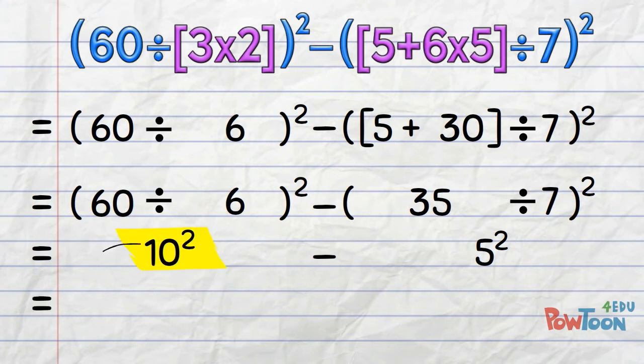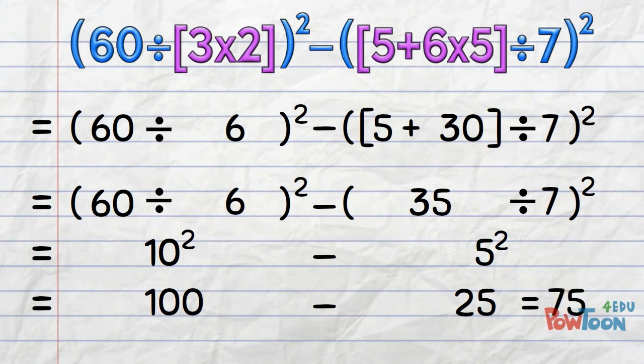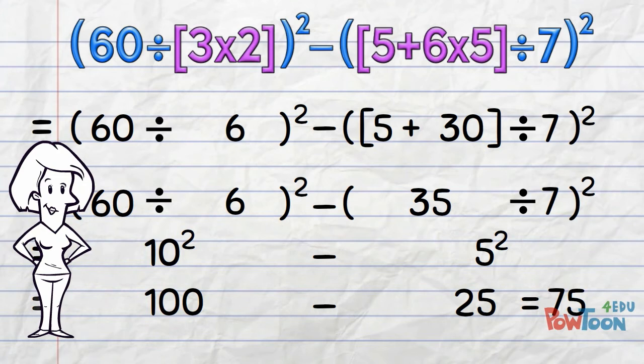10 squared: the factor 10 used 2 times, 10 times 10 is 100. Minus 5 squared: 5 times 5 is 25. 100 minus 25 is 75. And we're done! That went along very nicely!